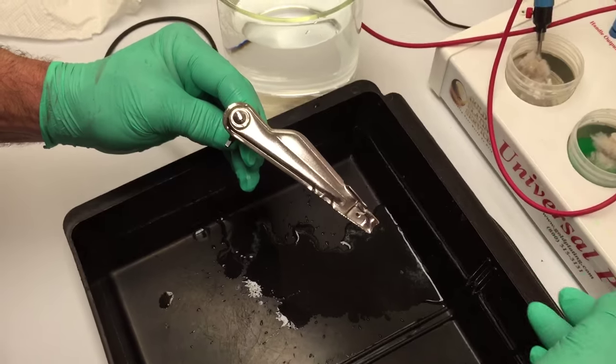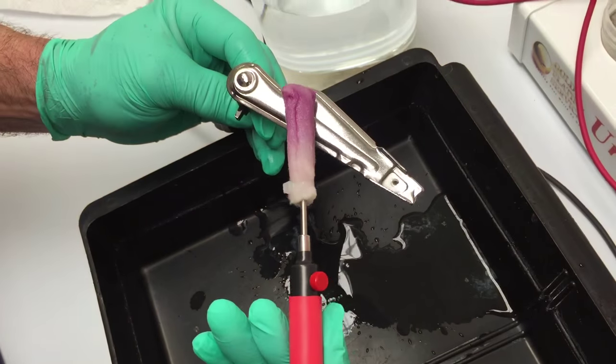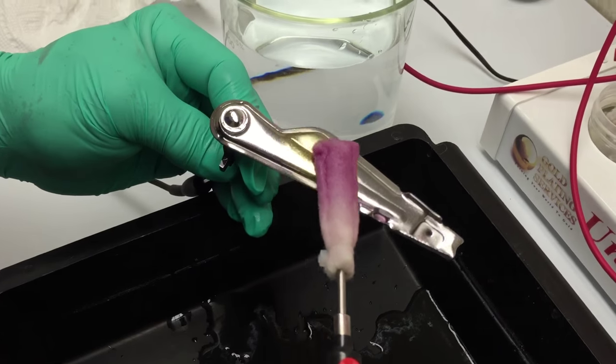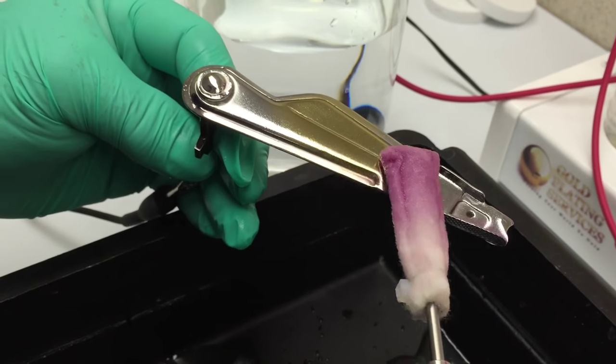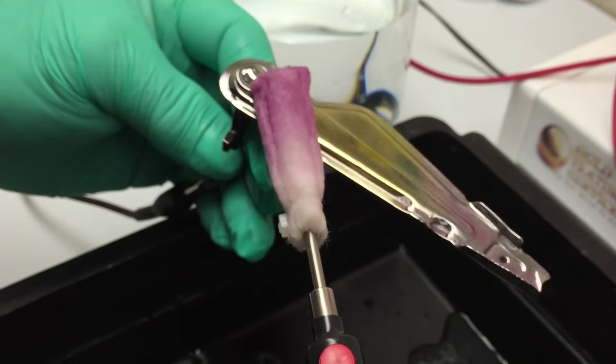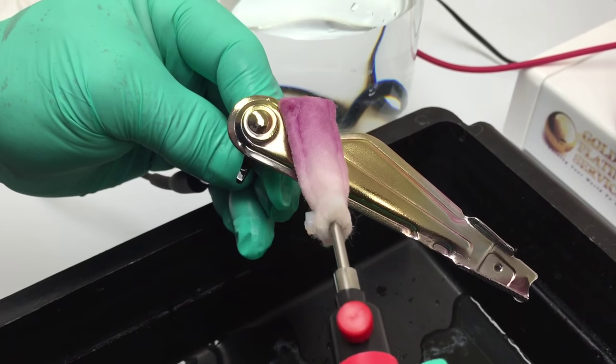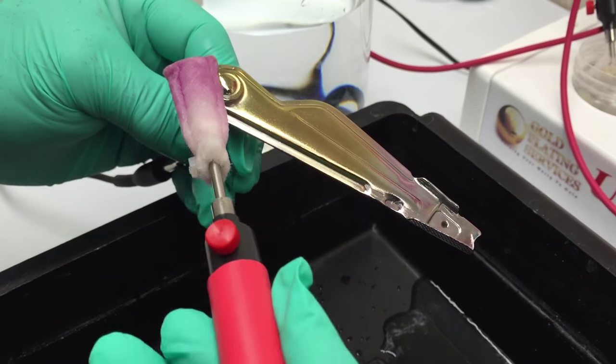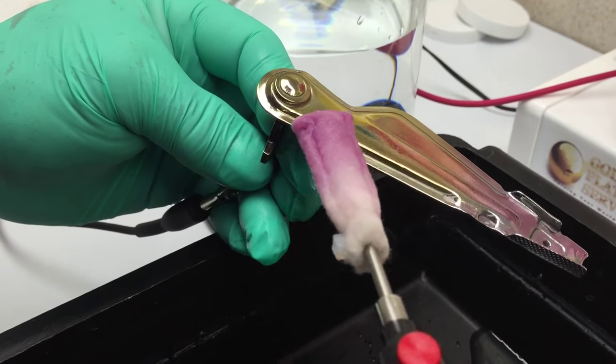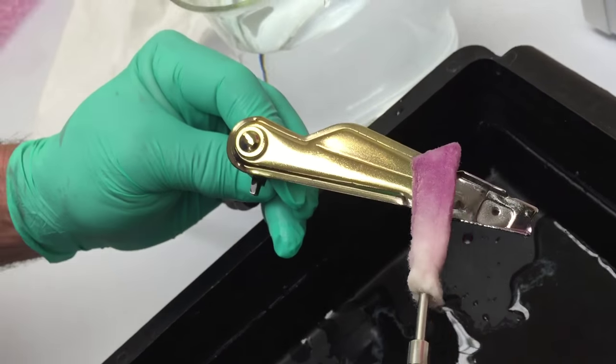Now that we've got it down, we grab the handle, we've rinsed again with the distilled water, and you can see that when I'm putting it on there, the gold is immediately taking and the part is turning gold.